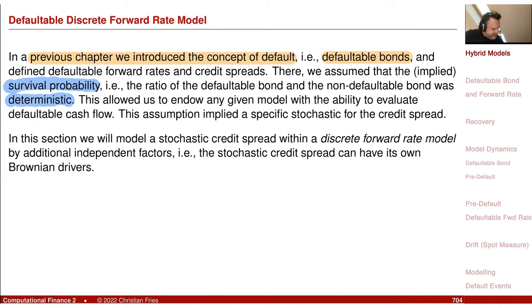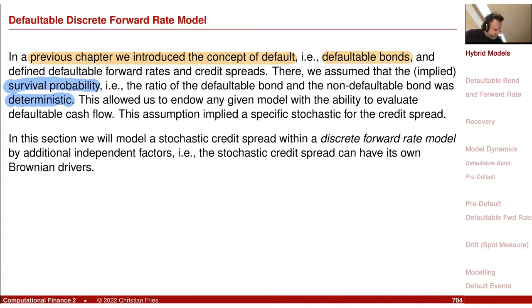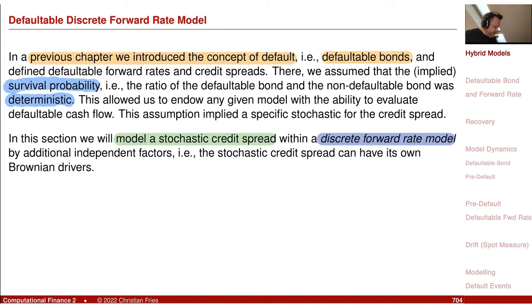What I would like to do today is to make a richer model. I would like to assume that the credit spread — the difference between the non-defaultable and the defaultable forward rate — is stochastic. So we will look at a model with a stochastic credit spread, within our discrete forward rate model, which defines our numeraire. In this model, the credit spreads can have their own Brownian drivers.